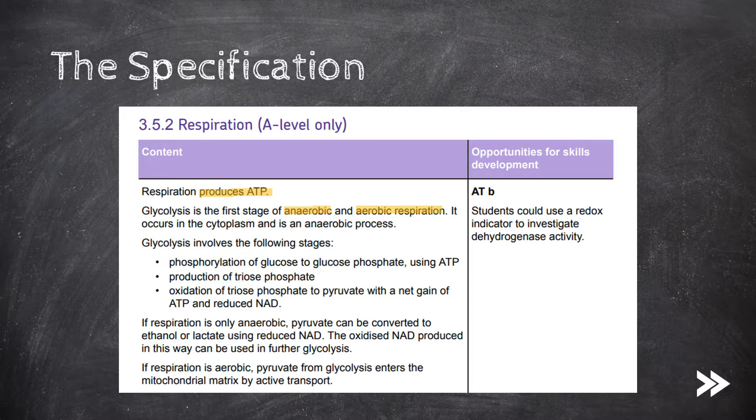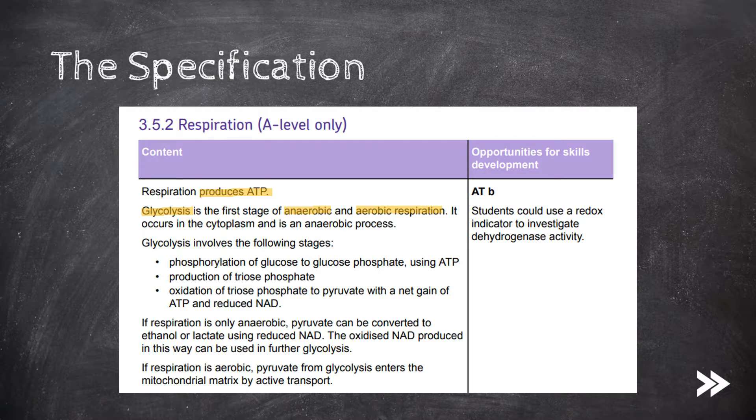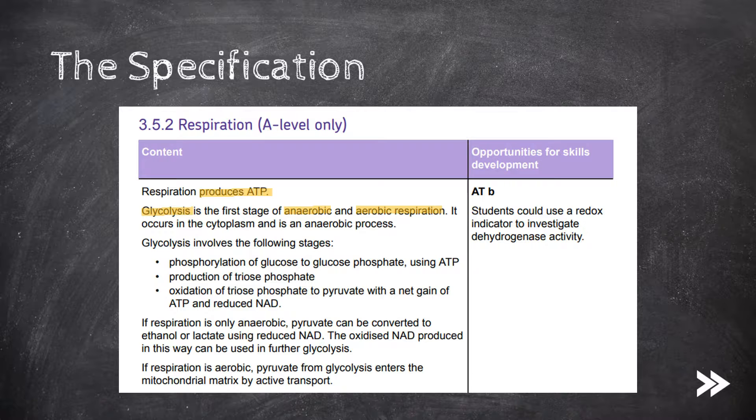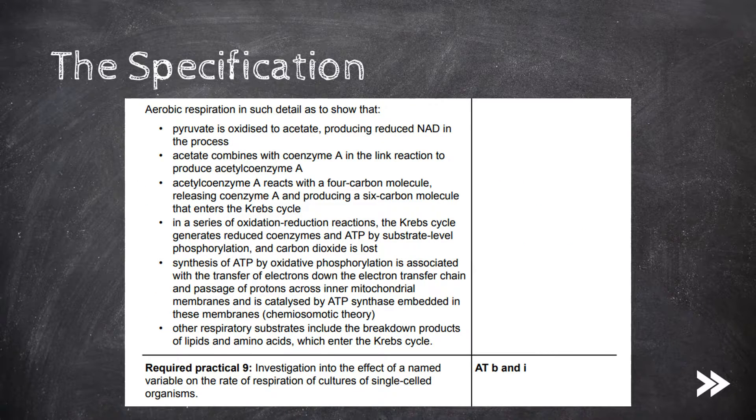So both types of respiration have one step in common, and this step is glycolysis, so we'll start with an explanation of this. Then we will consider what happens when not enough oxygen is available, and anaerobic respiration kicks in. If enough oxygen is available, respiration is aerobic, and we will then cover the different stages that make up the rest of aerobic respiration. This will include us covering stages such as the link reaction, the Krebs cycle, and oxidative phosphorylation. Finally, we should know that breakdown products of lipids and amino acids may also be used as respiratory substrates that can enter the Krebs cycle.